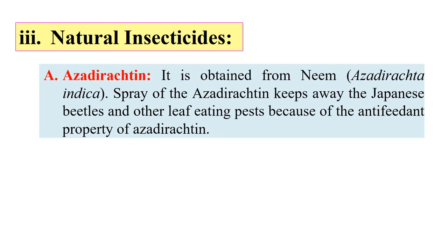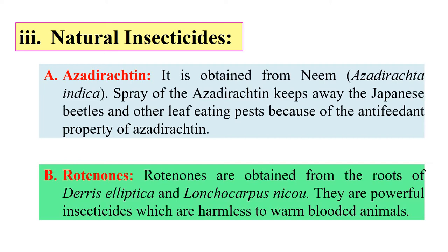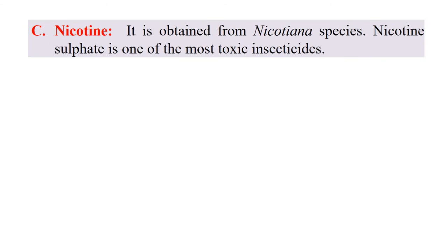A second example is Rotenones, obtained from the roots of Derris elliptica and Lonchocarpus nicou. These are powerful insecticides that are harmless to warm-blooded animals. Another example is Nicotine, obtained from Nicotiana species. The purified chemical is highly poisonous, and Nicotine Sulphate is the most toxic insecticide in this category.